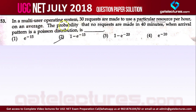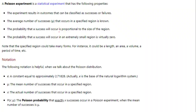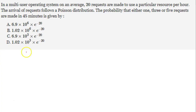Question number 53. In a multi-user operating system, 30 requests are made to use a particular resource per hour on average. The probability that no requests are made in 40 minutes when arrival pattern is a Poisson distribution. This is a very important Poisson distribution topic. A similar question was asked in GATE 2007 IT paper, and this question is also similar but with a slight modification.